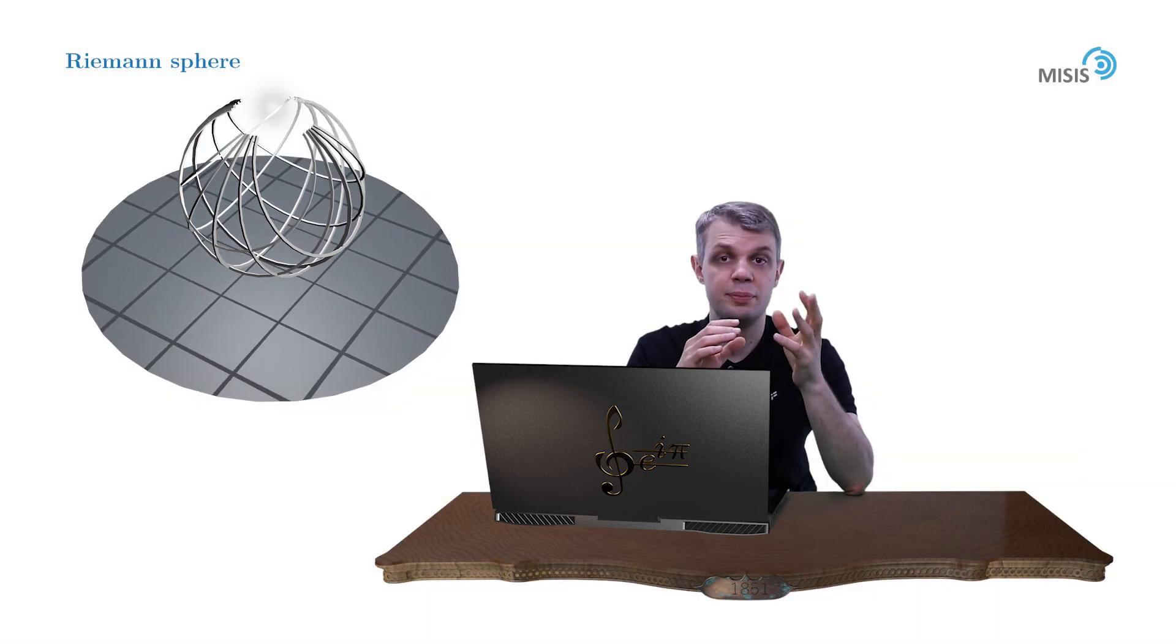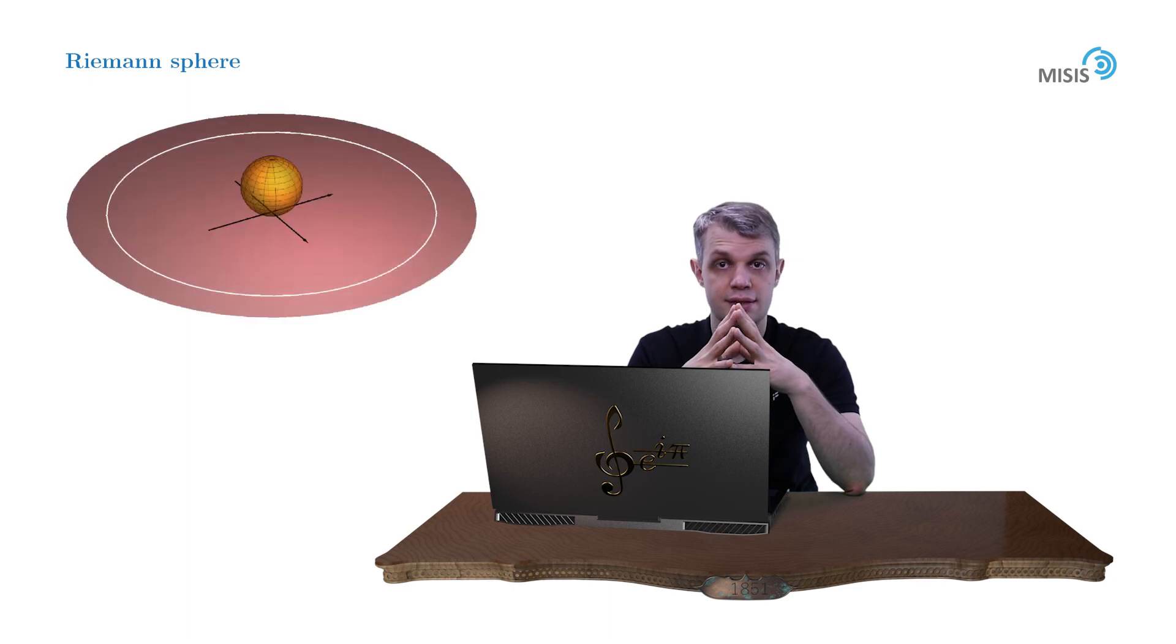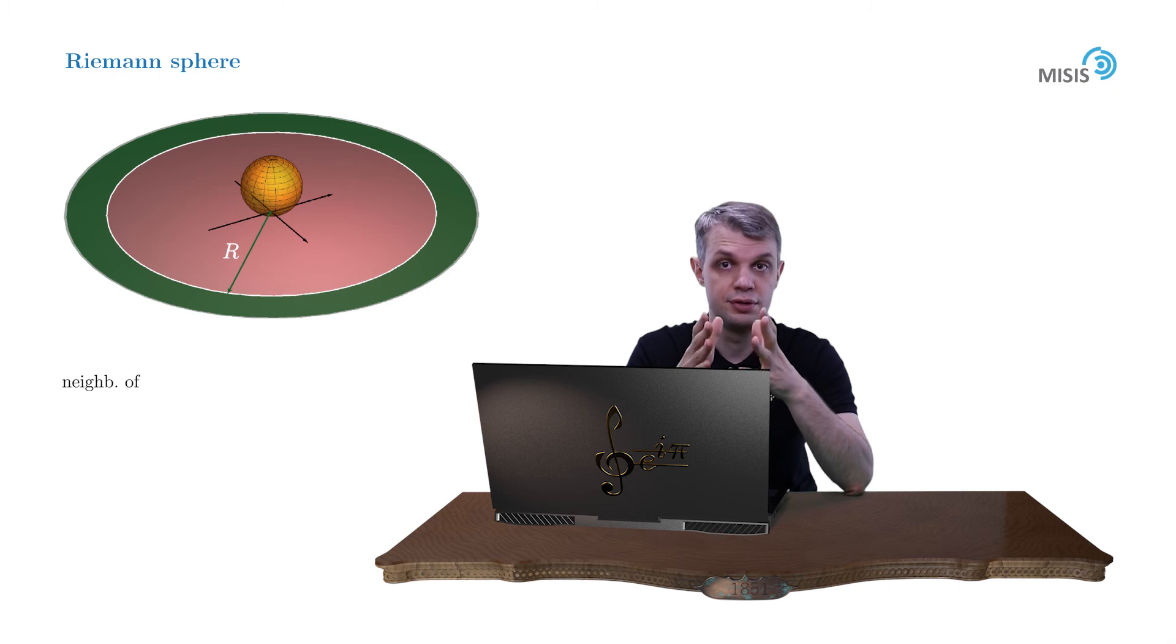Now let's talk a little bit more about the similarity of topology of a Riemann sphere and a complex plane. The neighborhood of infinity in a complex plane is understood as an exterior of a circle of radius R. So the equation is the modulus of z is greater than R.